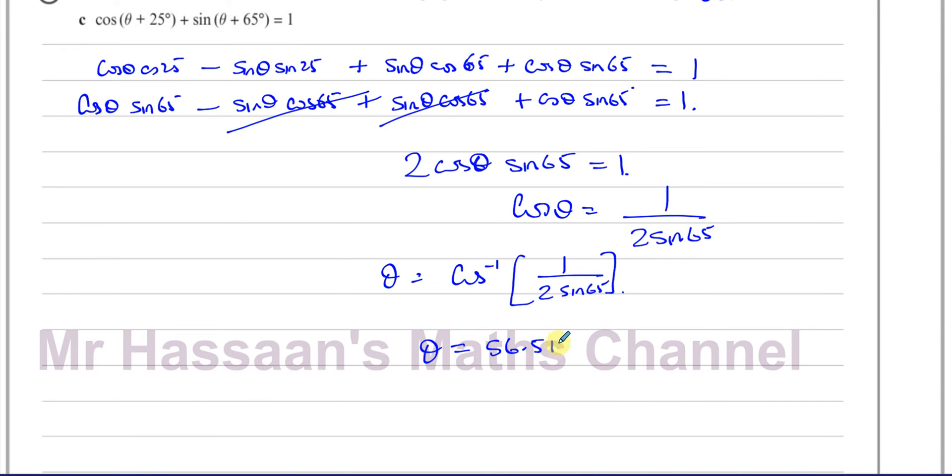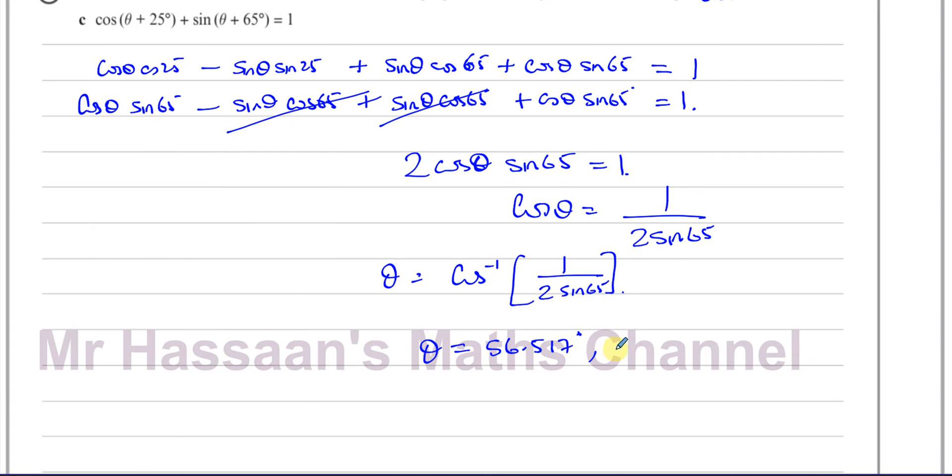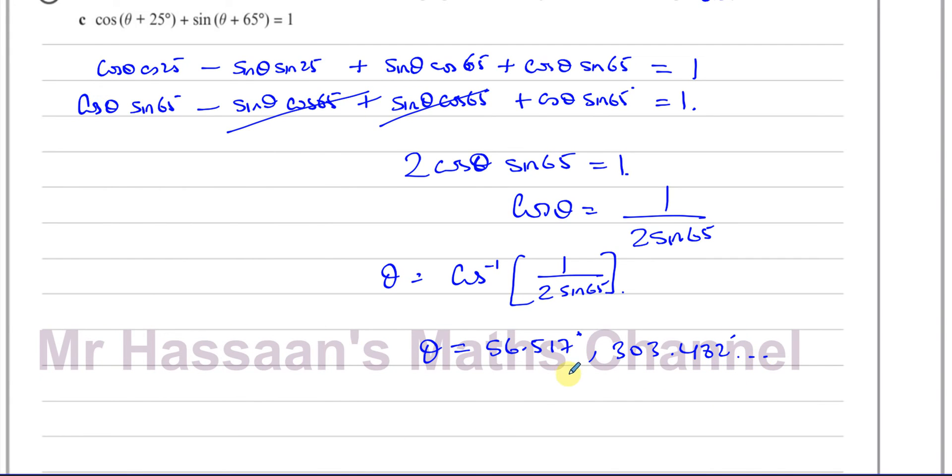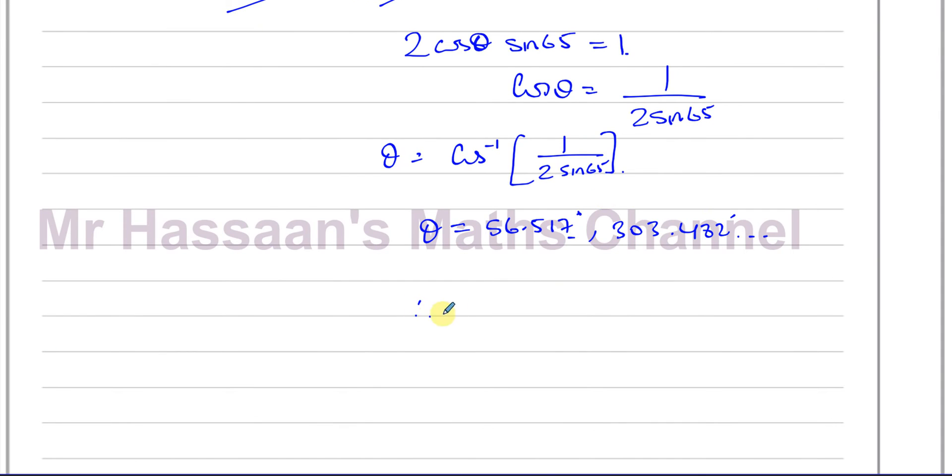The other solution for cosine is 360 minus this angle. 360 minus our answer gives us 303.482 degrees. We want to give the answer to one decimal place, so our final answers are 56.5 degrees and 303.5 degrees. Those are our solutions.